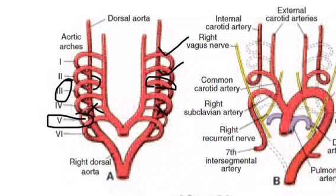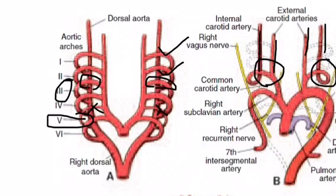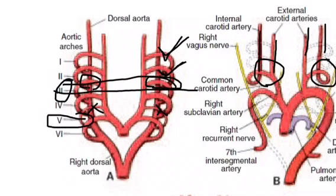The second aortic arch forms the stapedial artery. The third aortic arch, on both the right and left sides, forms the common carotid artery. In the adult, the common carotid divides into the external carotid and internal carotid arteries. So: first aortic arch → maxillary artery; second → stapedial artery; third → common carotid artery.